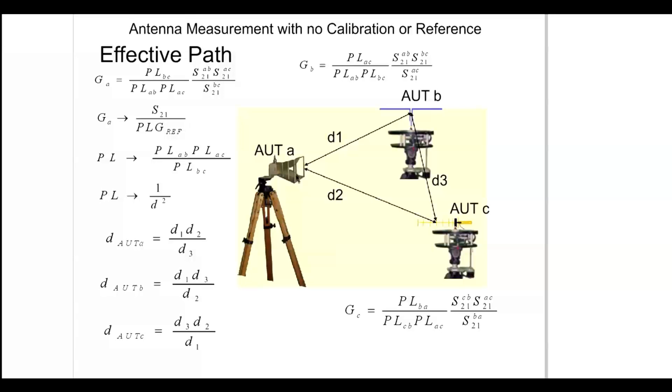The effective distance of a triangle increases the actual path loss. In another example, if the distance between B and C was half a meter while the distance between both A and B and A and C were 2 meters, the effective distance for AUT A would be 2 meters.